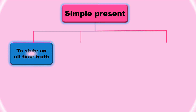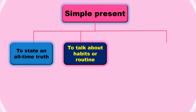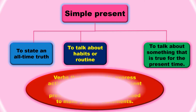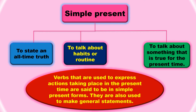Simple present is used to state an all-time truth — something that will not change. It is also used to talk about habits and routine — habitual actions. And to talk about something that is true for the present time. Words that are used to express actions taking place in the present time are said to be in simple present form. They are also used to make general statements. I hope you all understood simple present. Let us learn the next one.